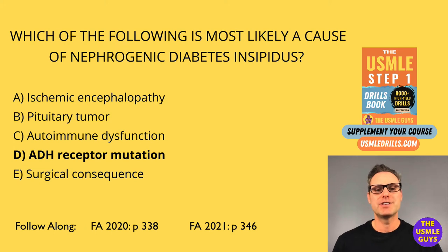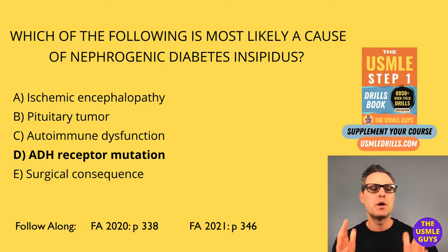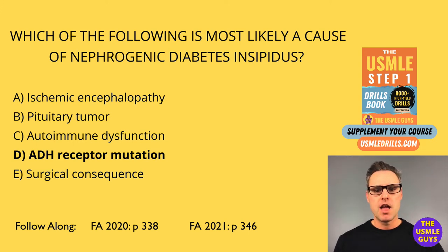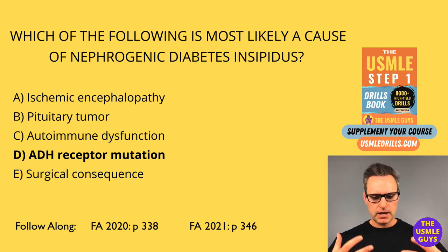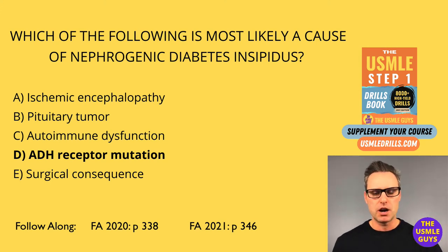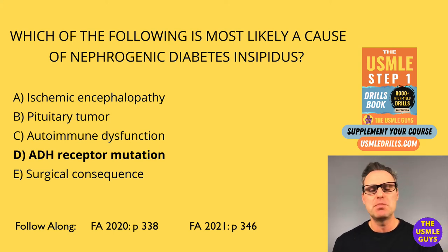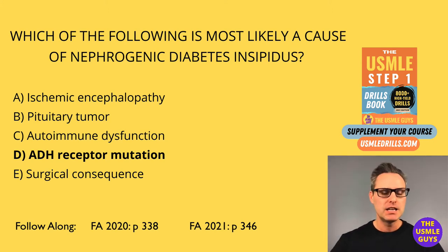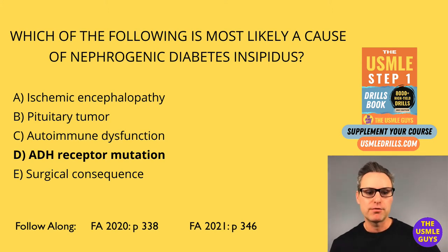The correct answer here is D, ADH receptor mutation. So we've got two types of diabetes insipidus: central and nephrogenic. The underlying signs and symptoms will be similar regardless — unquenchable thirst, polyuria with an inability to concentrate urine. This is due to either a deficiency of ADH, which is central, or an inability for the kidney to recognize ADH, which we call nephrogenic.